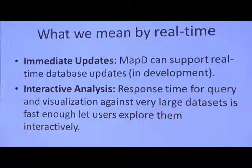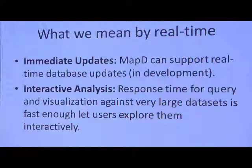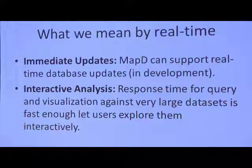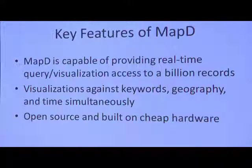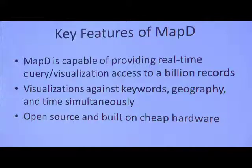The other thing we mean by real-time is the ability to allow a human being to explore a very large data set without dumbing it down, without necessarily biasing it by sampling it — literally querying that big data on the fly interactively. We're calling that real-time interactive analysis. Key features of MapD: real-time access to billions of records and visualization. You can do faceted queries across keyword, geography, and time simultaneously. It's open source and runs on very cheap hardware.